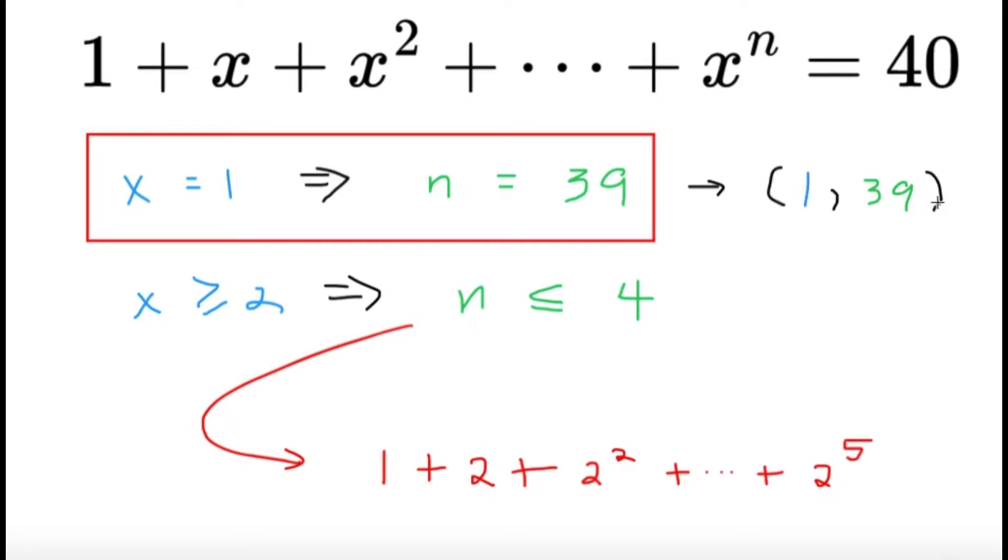Right, so setting the trivial case aside, let's try to focus on the other values of x. Let's say x is greater than or equal to 2. We're talking about natural numbers here. So we can do some bounding here. We can bound the value of n. Now, here I can conclude that n is less than or equal to 4. Why n is less than or equal to 4? So let's try to talk about it.